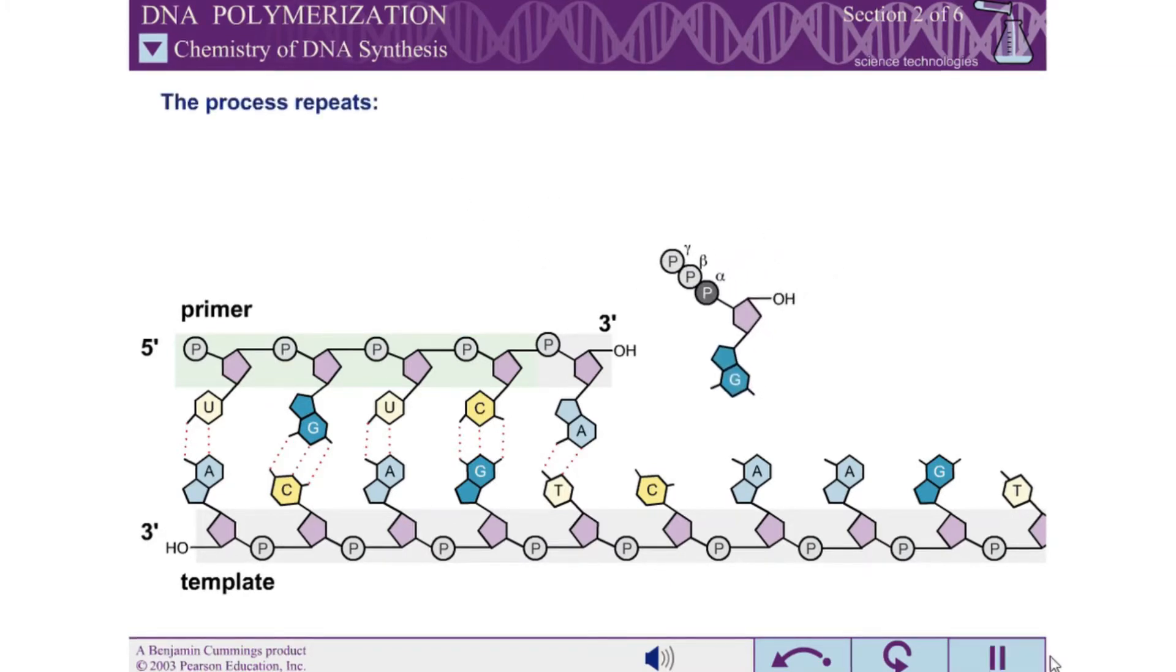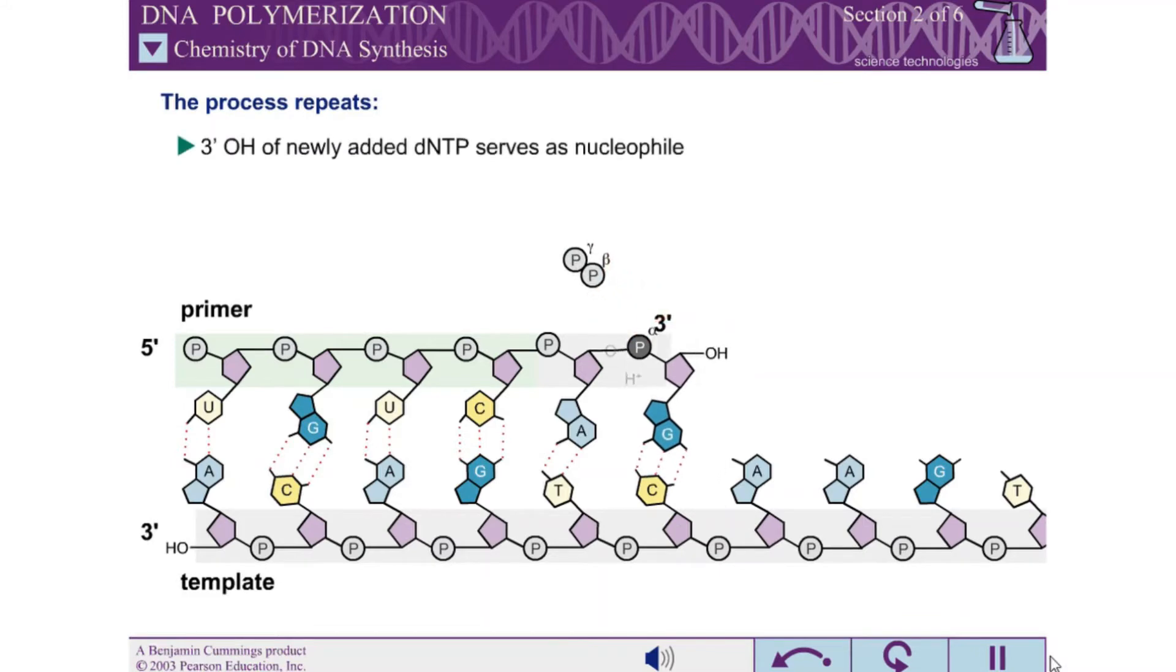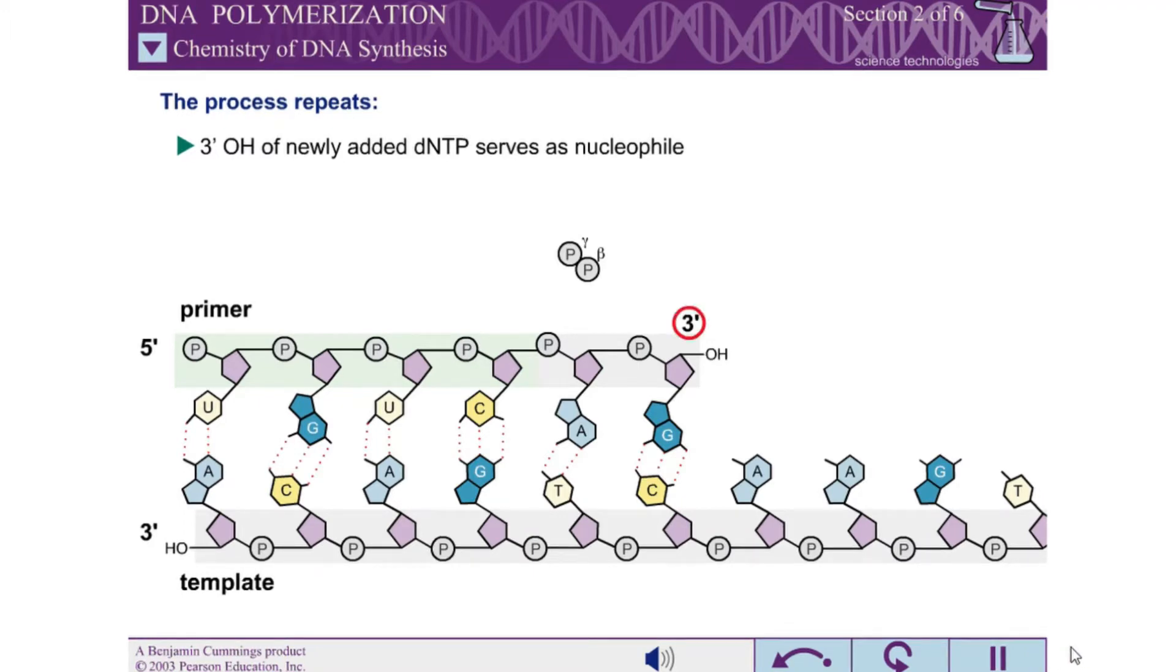The process can then be repeated with the 3 prime hydroxyl of the newly added DNTP serving as the nucleophile. The chemistry of DNA synthesis requires that DNA be made in a polar fashion. In biological polymerization, DNA is always made by extending the 3 prime end of the primer strand.